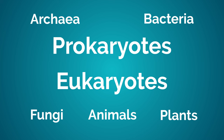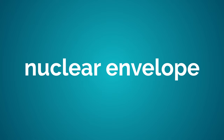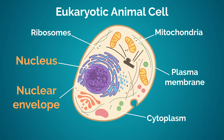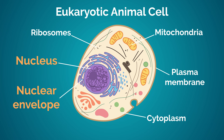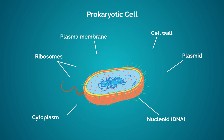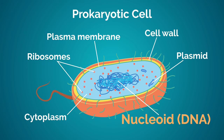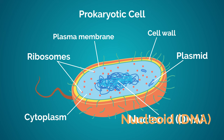If the genetic material is enclosed by a nuclear envelope, giving a definite nucleus, then they are eukaryotic, like this animal cell. Whereas in prokaryotic cells there isn't a nuclear membrane and so no definite nucleus. The DNA is in the cytoplasm. We call a nucleus without a nuclear membrane a nucleoid — it isn't really a structure at all, it is simply the area in which the DNA exists.